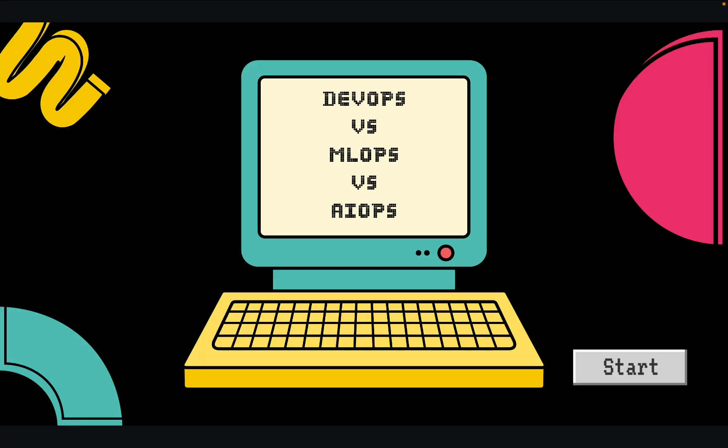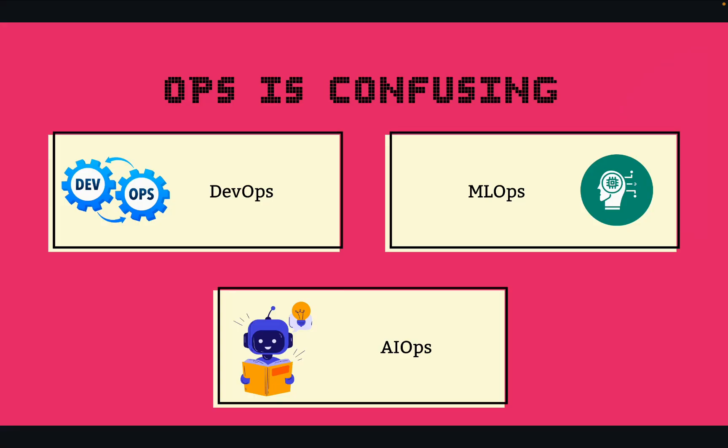In today's tech world, you will often hear the terms DevOps, MLOps, and AIOps. But what do they really mean and how are they different from each other? Well, that's the purpose of this video. In this video, I'll help you understand how these terms differ, what problems they solve, what tools they use, and why they are needed. So let's get started.